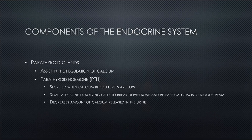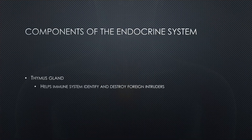The parathyroid hormone decreases the amount of calcium released in the urine by stopping calcitonin, thereby stopping excretion of calcium via the kidneys. Next up, we have the thymus gland, which simply helps the immune system identify and destroy foreign intruders.